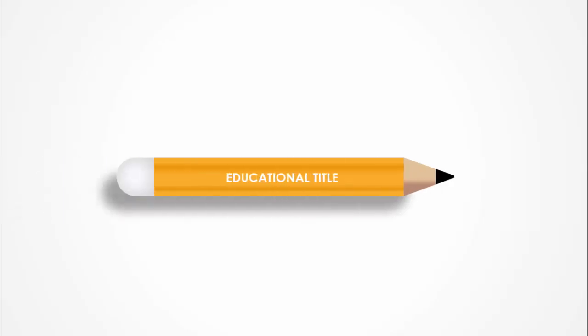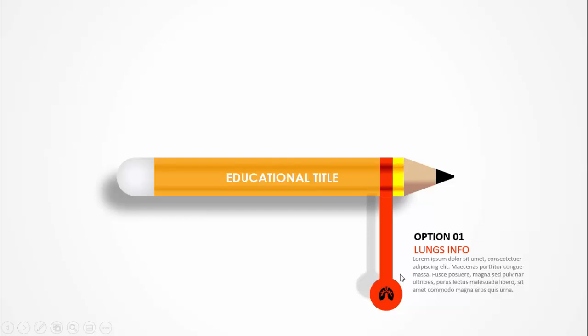In today's tutorial I'm going to show you how to create a four-step educational infographic style in PowerPoint. When I click, you can see a pencil comes — this is completely made in PowerPoint. You can add your title here and when I click the first option comes. I've added some lungs info and detail text, which is completely editable. You can add any text as per your requirement, and I've added a shadow effect at the back.